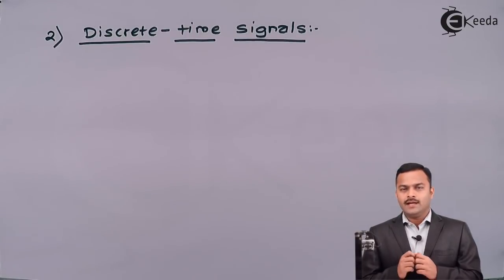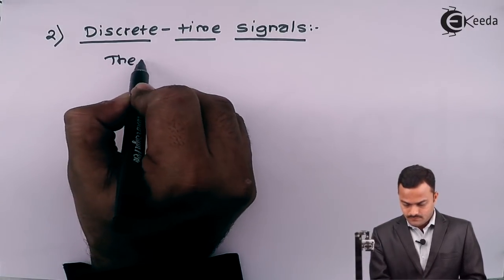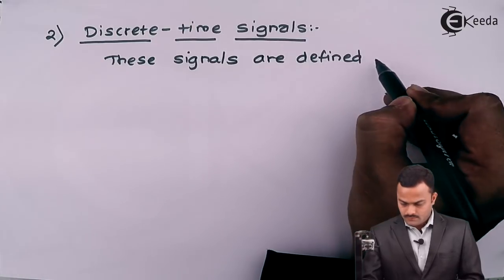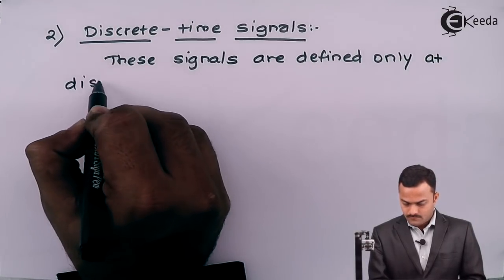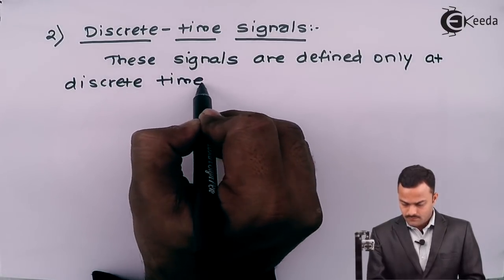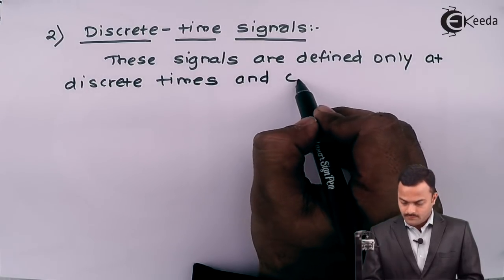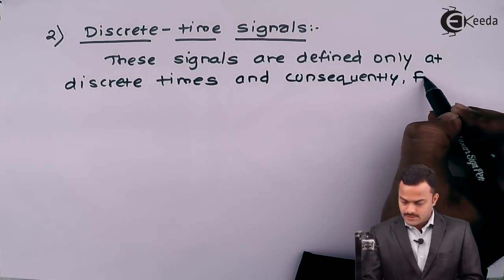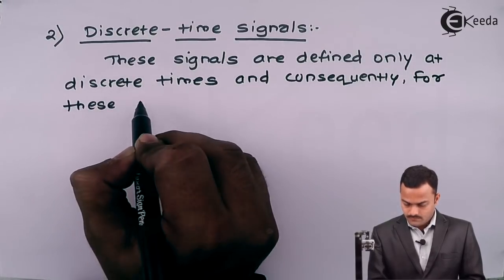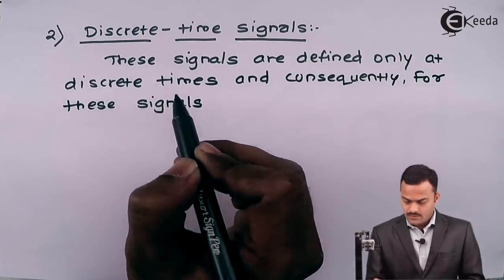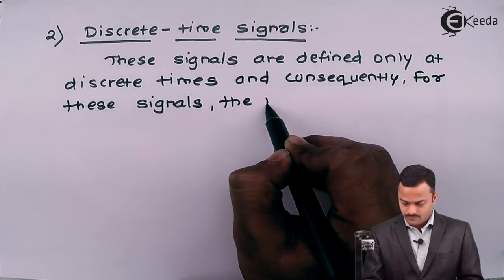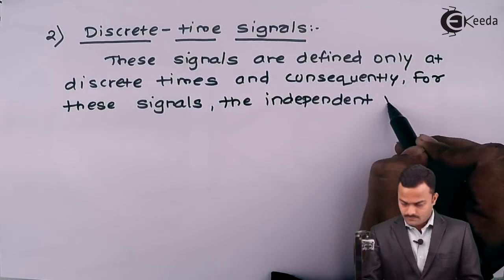Discrete time signals are only defined for discrete time intervals, and consequently for these signals the independent variable only takes discrete values.